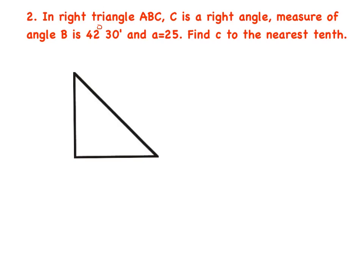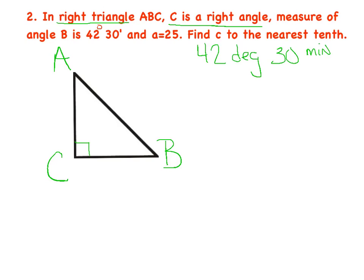In example two, right triangle ABC — make sure you draw your right triangle. C is a right angle, so label it with a right angle box; A and B can go wherever. The measure of angle B is 42 degrees and 30 minutes — kind of like latitude and longitude, it's just another way to measure things more precisely. Label that in angle B. Lowercase a represents side a, which is across from angle A, and equals 25. Find c — so put your X across from angle C.